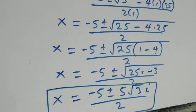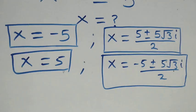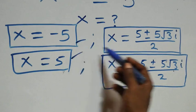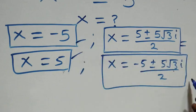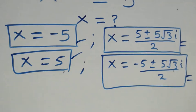Hence, all together we have six solutions to this given problem: two real solutions x = -5 and x = 5, two complex solutions from the sum of cubes branch, and two complex solutions from the difference of cubes branch — making six solutions in total.